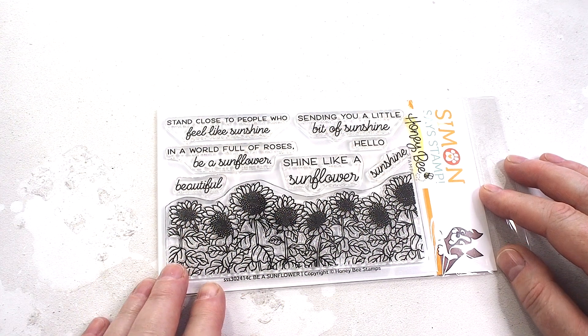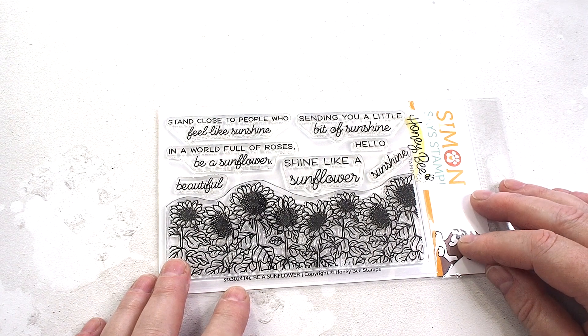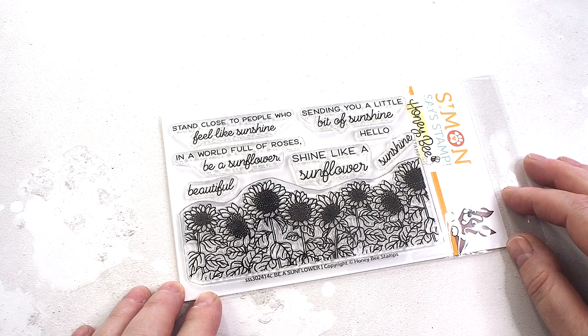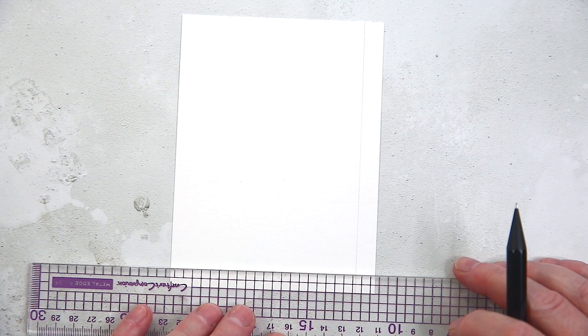Let's jump straight into making the card. The Honey Bee Stamptember stamp set, called Be a Sunflower, has a wonderful wide sunflower border along with a bunch of sweet sentiments. I knew it would look great stamped over a colorful background.